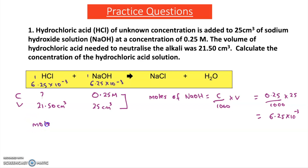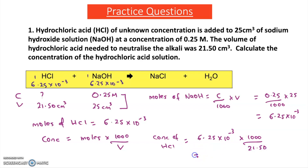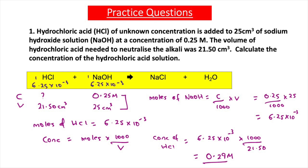Now I know the moles of HCl (6.25 × 10⁻³) and the volume of HCl (21.50 cm³), so I can calculate its concentration. Concentration = moles × 1000 ÷ volume = 6.25 × 10⁻³ × 1000 ÷ 21.50. Putting this into the calculator gives a concentration of HCl = 0.29 mol dm⁻³. Remember, you can write mol dm⁻³ or simply use a capital M, as M stands for moles per decimetre cubed.